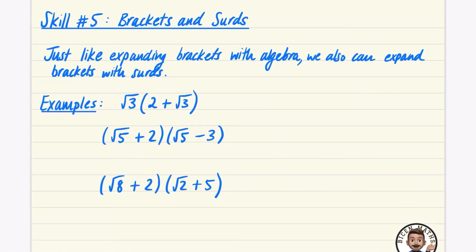On to skill number five, which is about brackets and surds, so really it's just more multiplication. It's worth reminding ourselves about how we expand brackets — both single brackets and double brackets — just like expanding brackets with algebra. We can also expand brackets with surds.